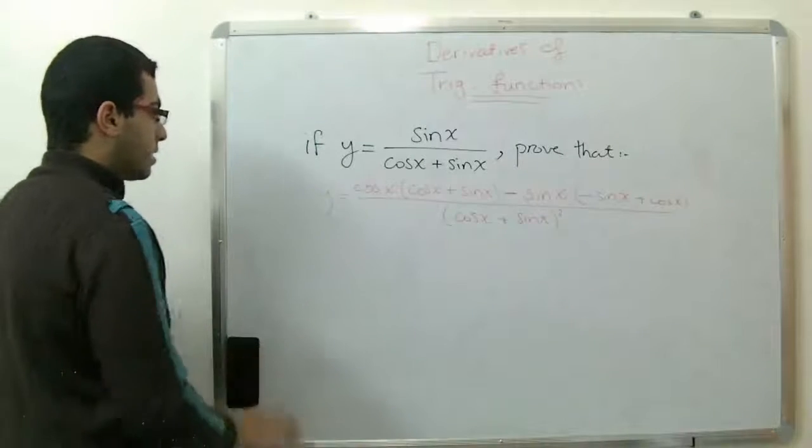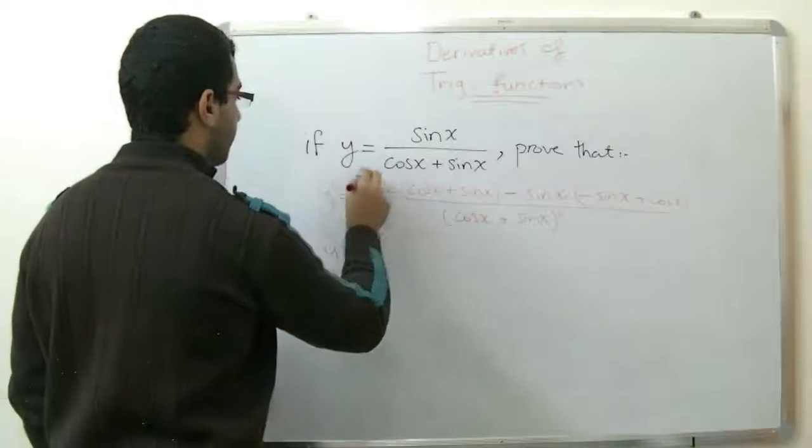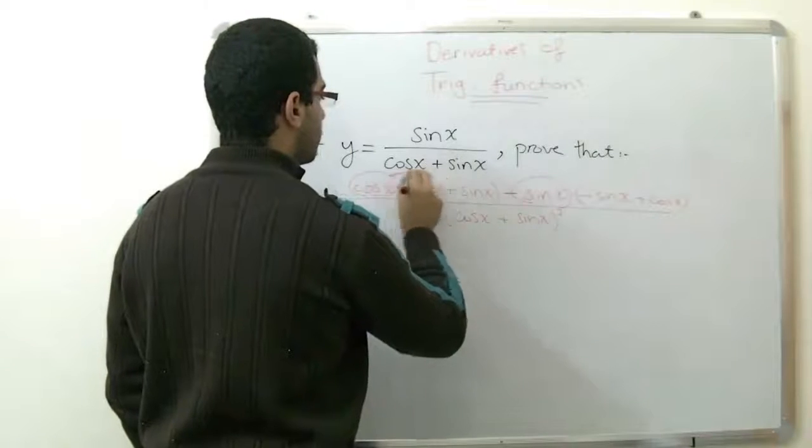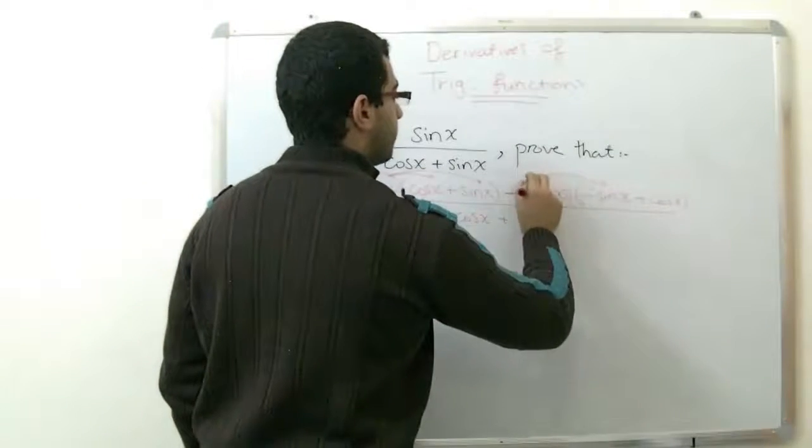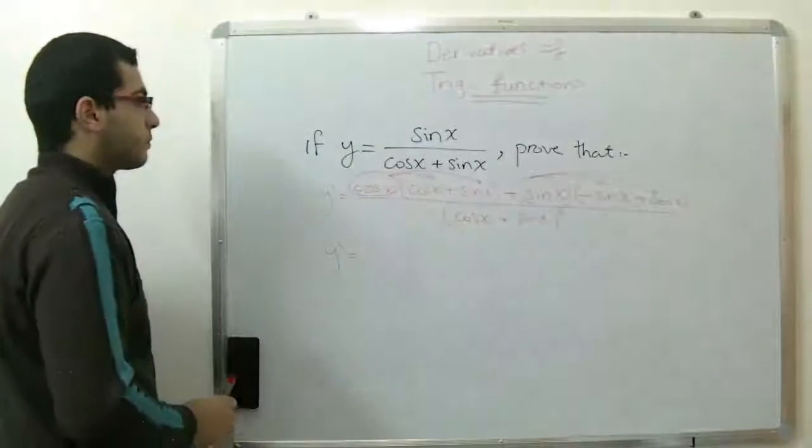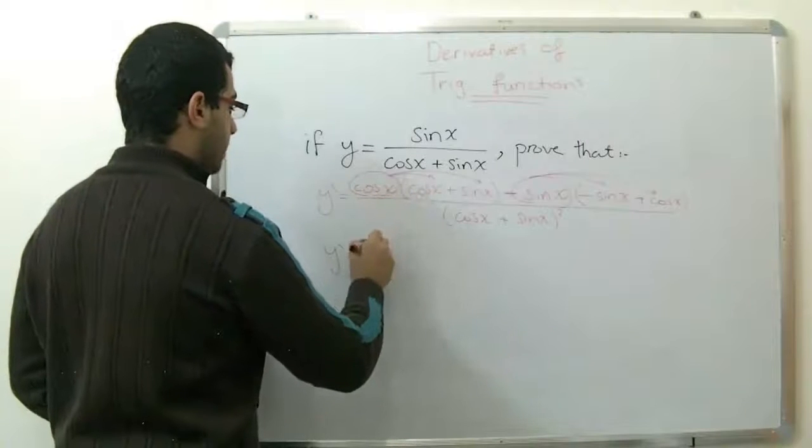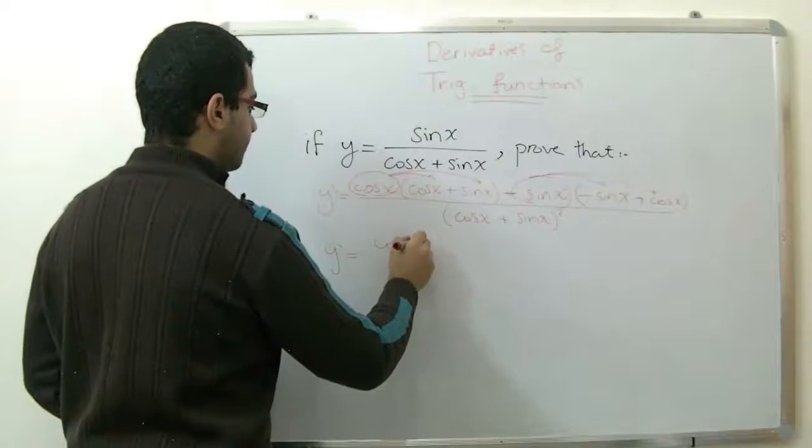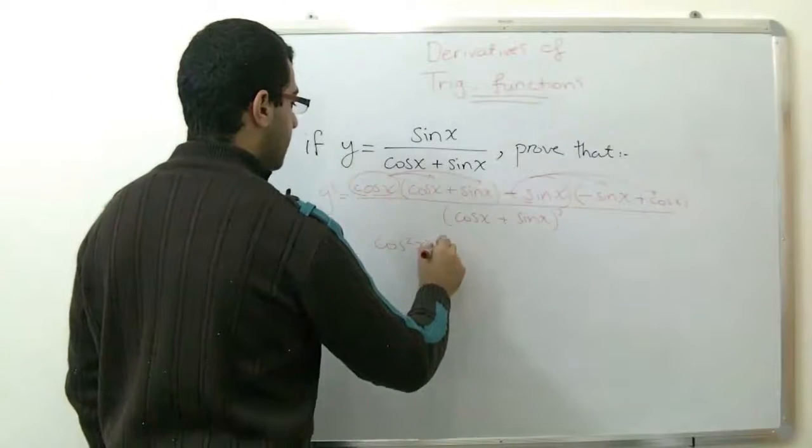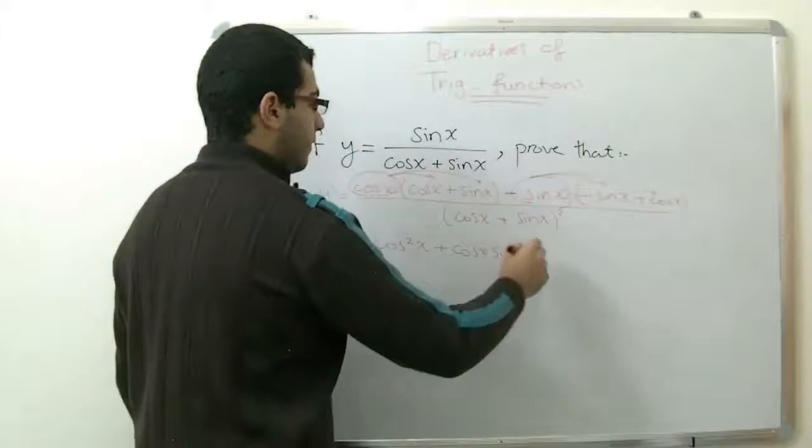The next step is to introduce those two items inside the brackets and factorizing the bracket here downwards. So cosine x multiplied by cosine x gives cosine squared x. Cosine x by sine x gives cosine x sine x. Here we have a negative.